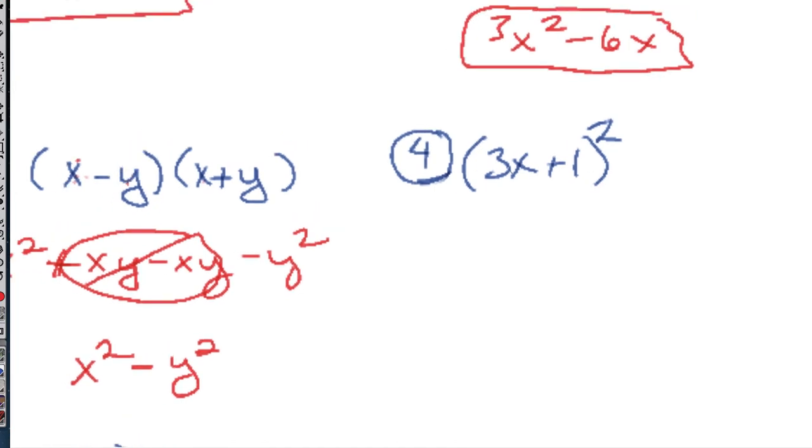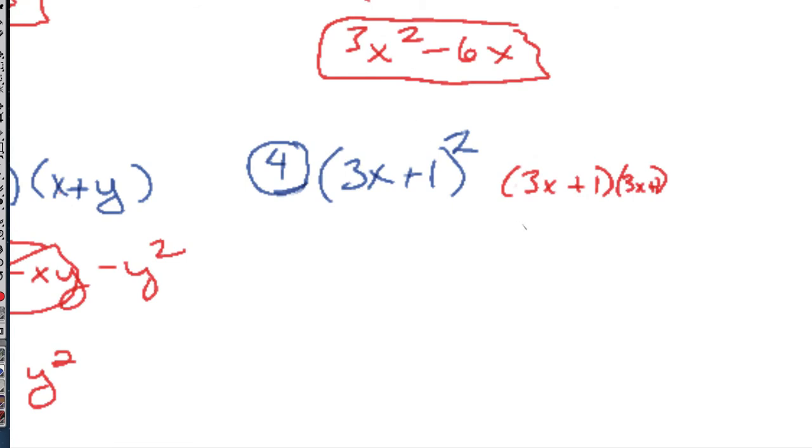Here we have a perfect trinomial square. You can go off to the side and FOIL it out and rewrite this as (3x + 1) times (3x + 1), and then do the first, outer, inner, last. So in this case, it would be 9x² plus 3x plus 3x plus 1.